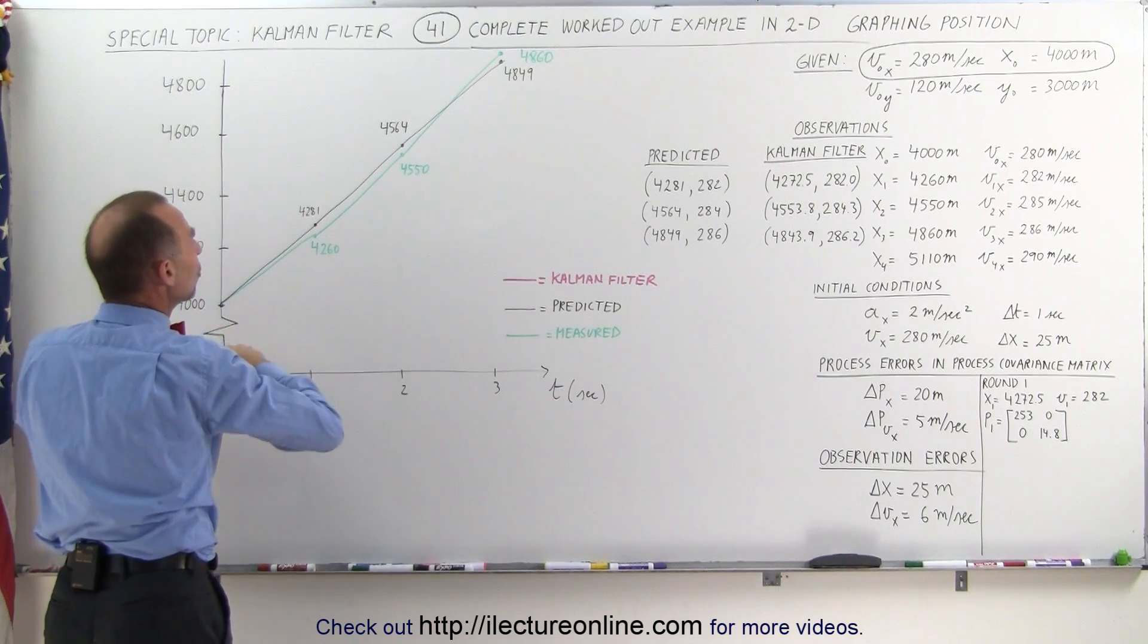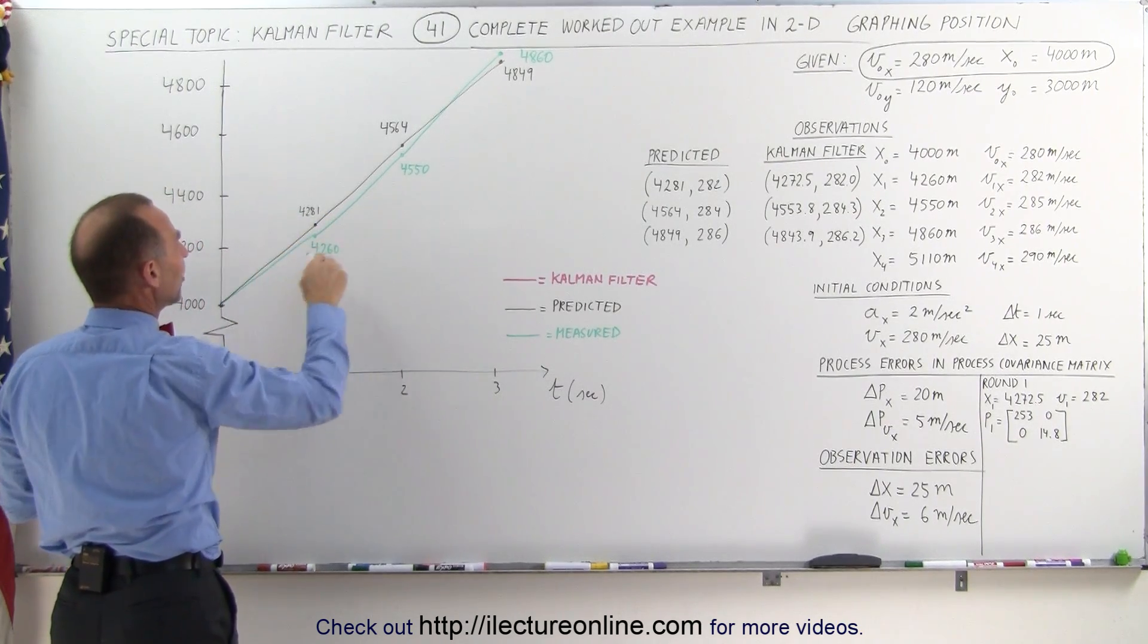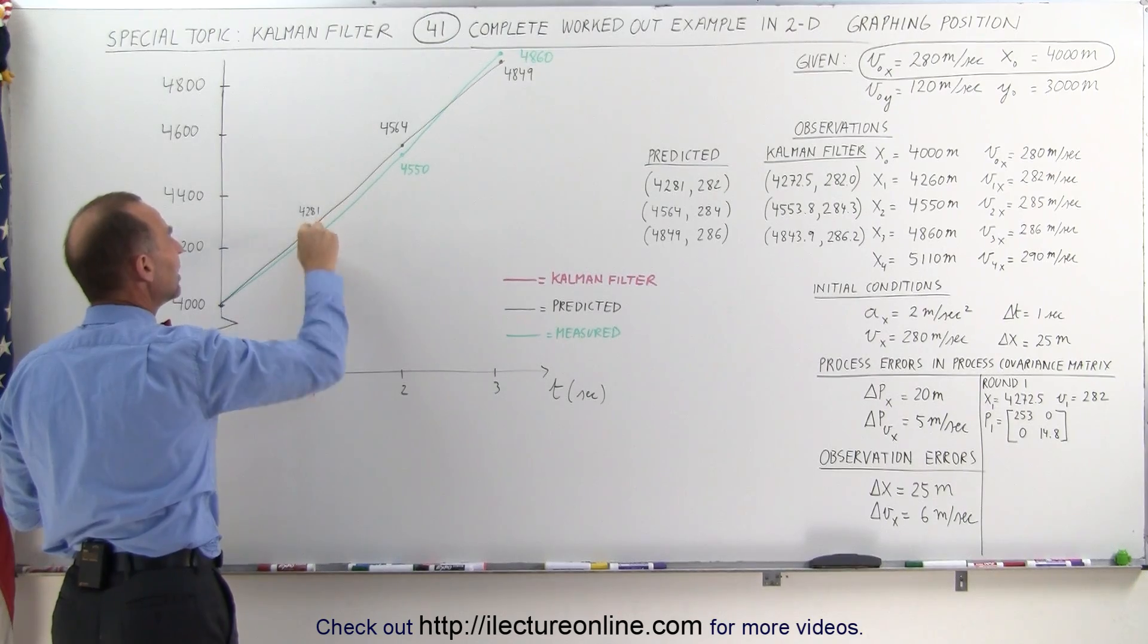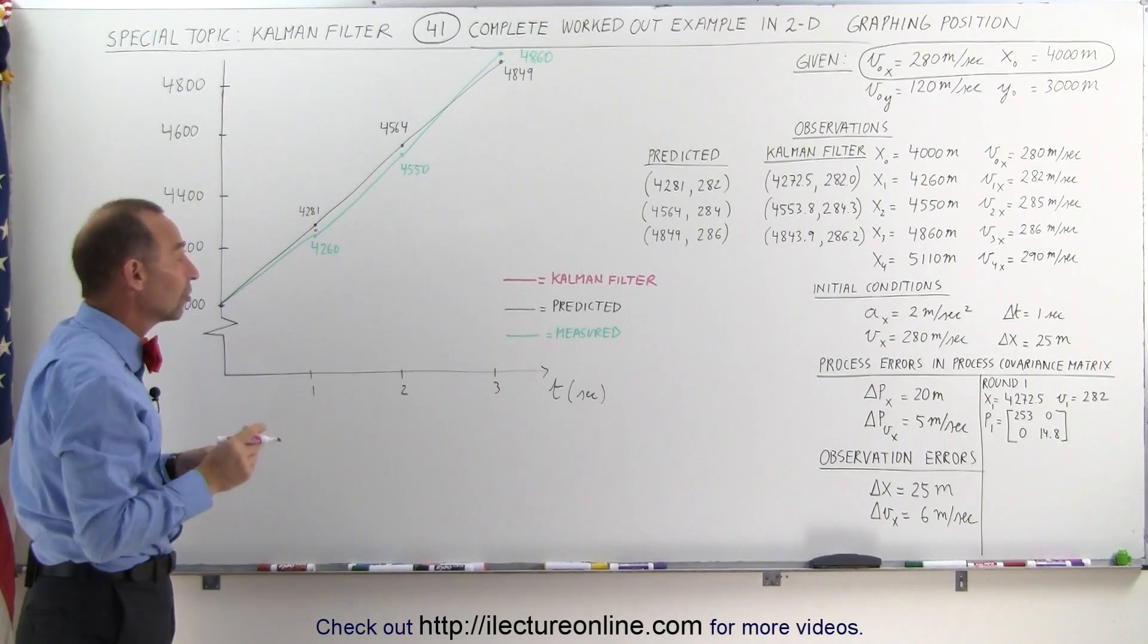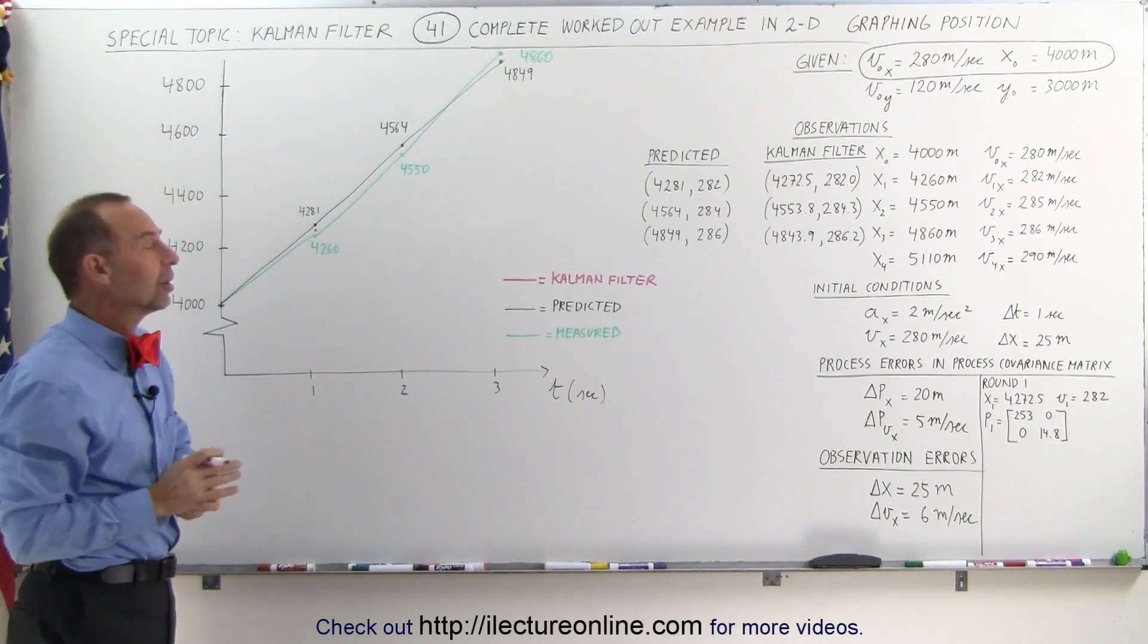which is right in between the measured value and the predicted value, which is kind of neat to think about, that it smooths out the difference between predicted and measured values. Of course, neither one of them are absolutely correct.